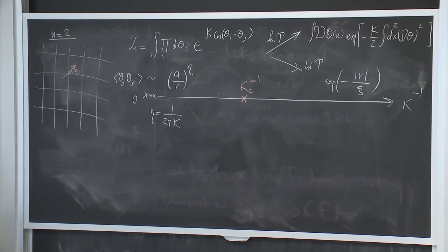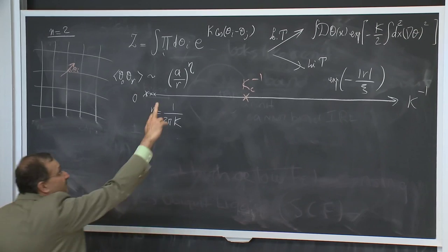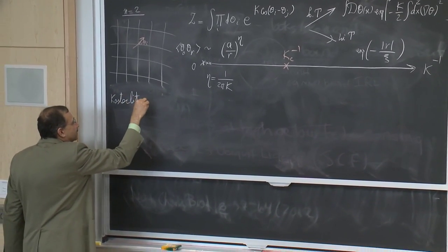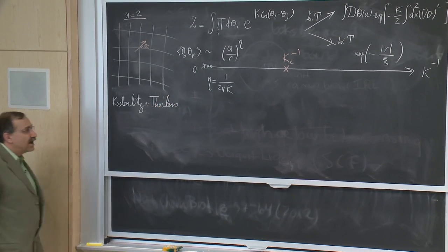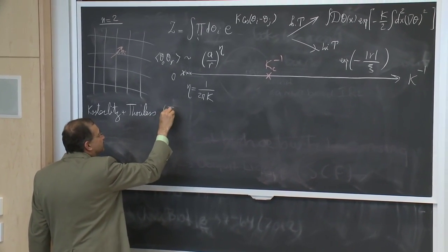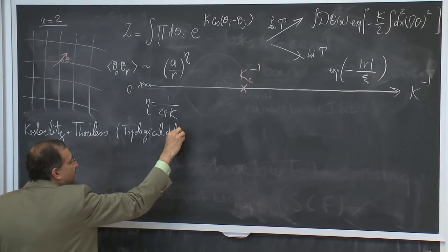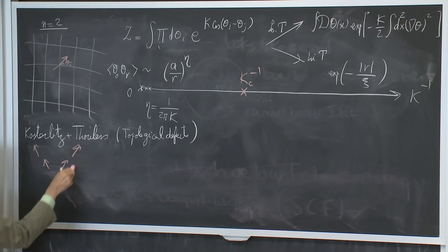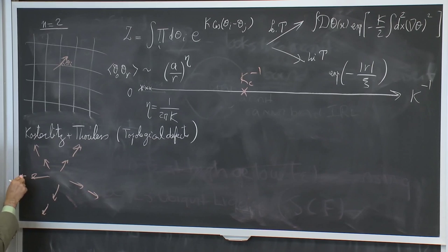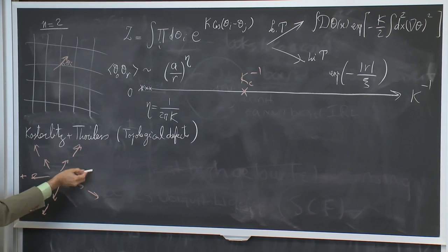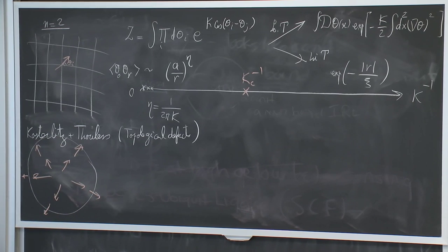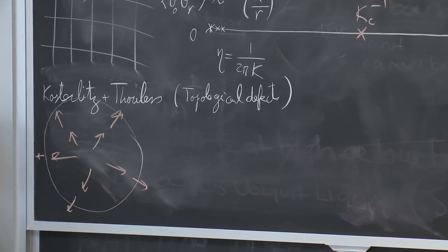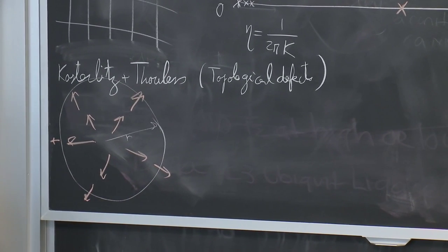There is a twist not taken into account when making that transformation, as pointed out by Kosterlitz and Thouless: topological defects that are left out. An example is a configuration of spins radiating out from a point such that when you complete a circuit going around, the value of spin changes by 2 pi. The gradient of the change in angle at distance r falls off as 1 over r.